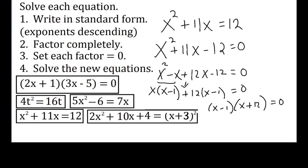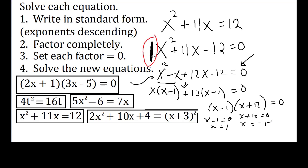You don't have to use the AC method if the coefficient in front of x² is 1 — you can sometimes do it in your head. But if it's anything other than 1, you need to show the AC method. Setting each factor equal to zero: x - 1 = 0 gives x = 1; and x + 12 = 0 gives x = -12. Again, two answers because we had an x² in our equation.